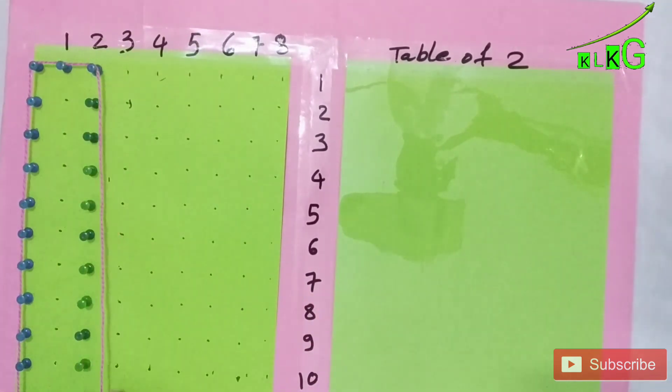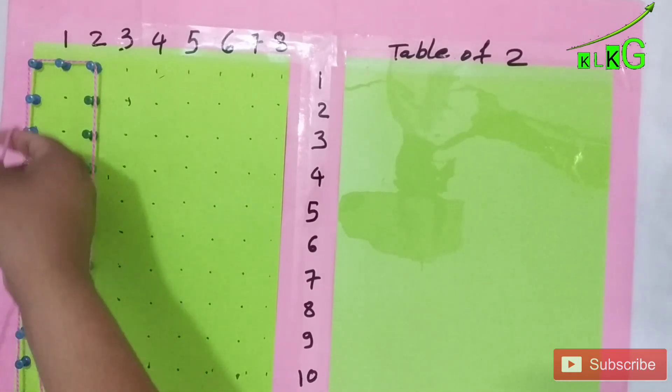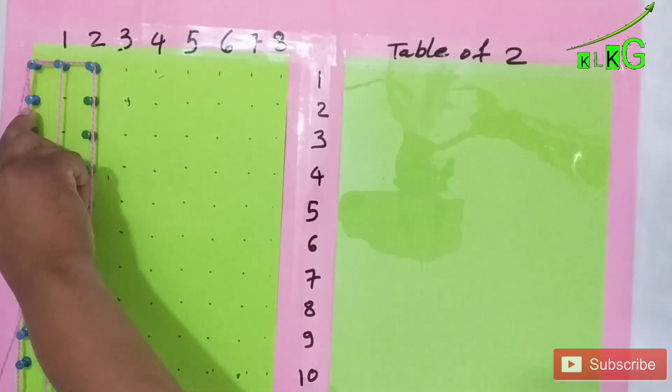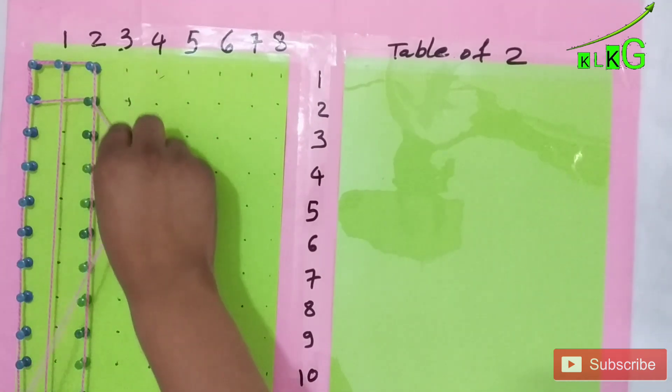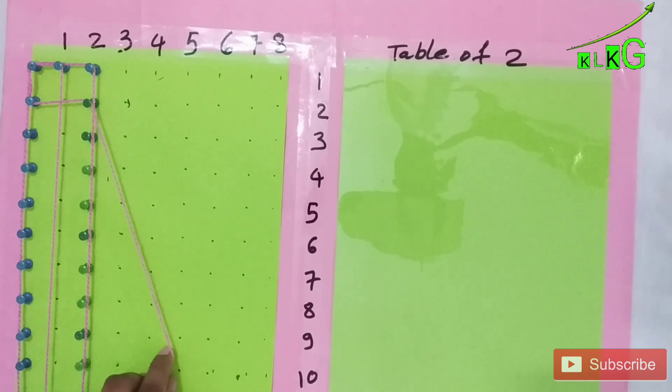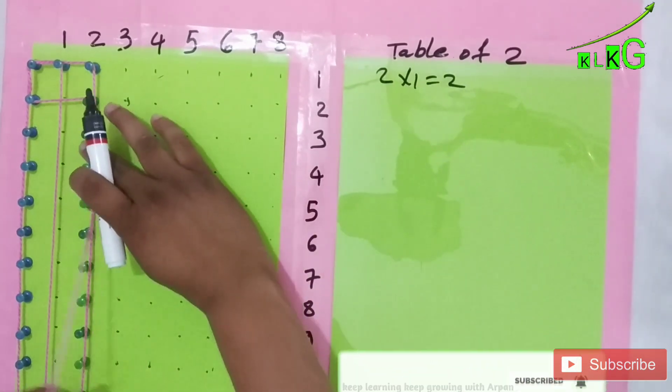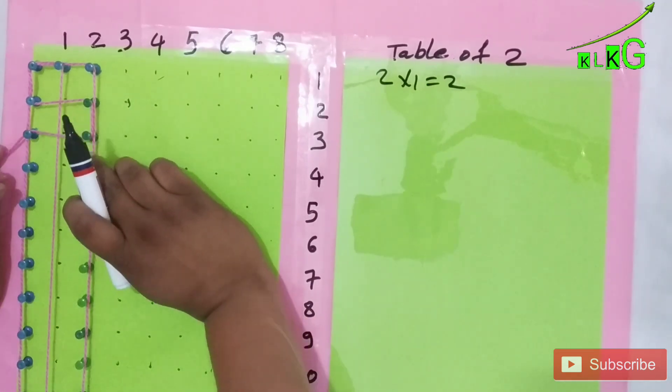Now see the magic of woolen thread. You have to cover the thread like this. And now initially, if the first one is two ones are two, right? So we can see two boxes, two blocks. So on the right hand side we are going to write two ones are two.